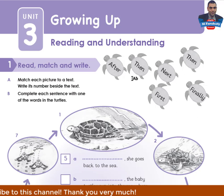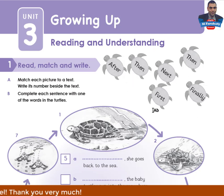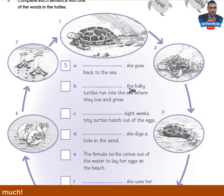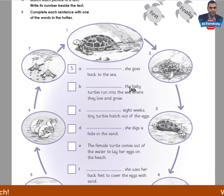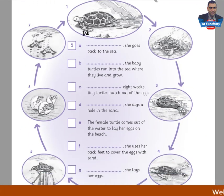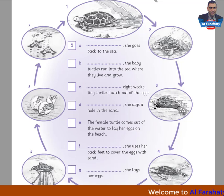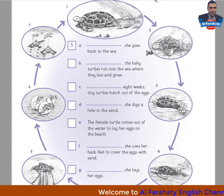We use time sequencers when we tell a story, to order events or actions. Now let's look at the pictures. We have here 7 pictures. This is the life cycle of a turtle that you've studied in lesson 1.